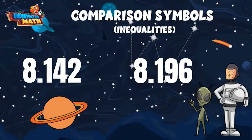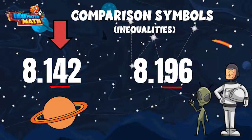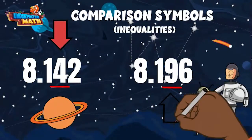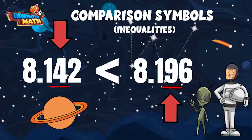Let's look at the next place value, the tenths. Again, both numbers have the same digit in the tenths place value. Let's go to the next place value. This number has a 4 in the hundredths place value, but the other number has a 9 in the hundredths place value. Since 9 is greater than 4, we know the entire number is greater than the other. We would put the less than comparison symbol between these two numbers so the symbol opens up to the larger number 8.196. This statement reads as 8.142 is less than 8.196.